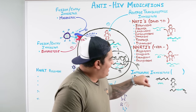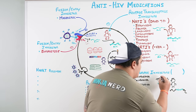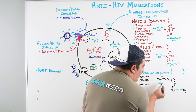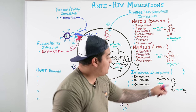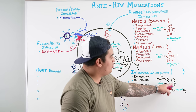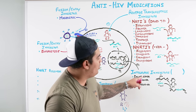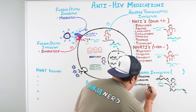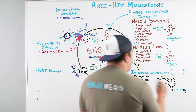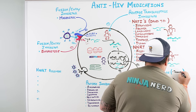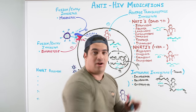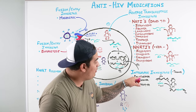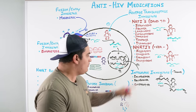Integrase inhibitors block this incorporation of viral DNA into host cell DNA. The drugs in this class are Dolutegravir, Raltegravir, and Elvitegravir. The key mnemonic: all integrase inhibitors end in '-tegravir'. So: NNRTIs have 'VIR' in the center; integrase inhibitors end in '-tegravir'.